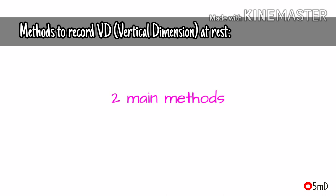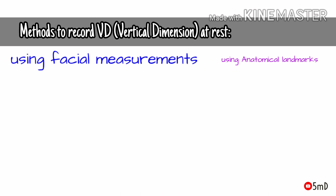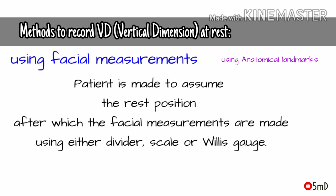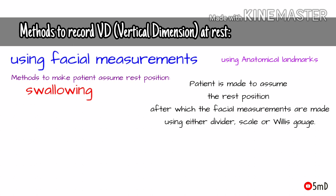Before recording the vertical dimension at rest, make sure that the patient is relaxed in a physiological rest position and is free of any neuromuscular disturbance. There are two methods on the whole to record vertical dimension at rest: one is using facial measurements, and the other using anatomical landmarks. Before starting the first method, mark two points — one on the tip of the nose and the other on the chin. These points should be constant throughout the procedure, so mark with a permanent marker or adhesive tape.